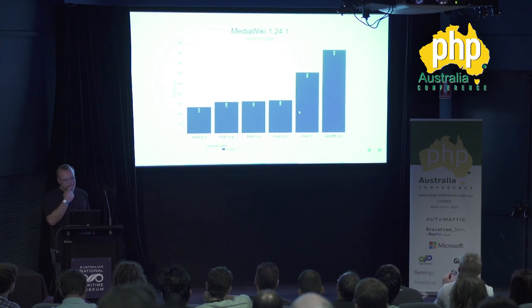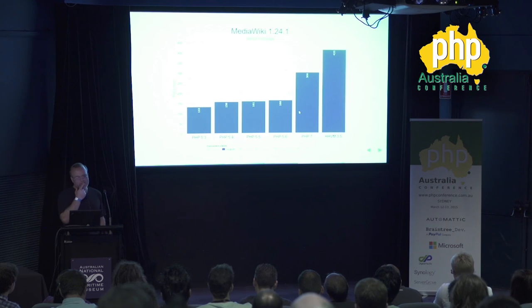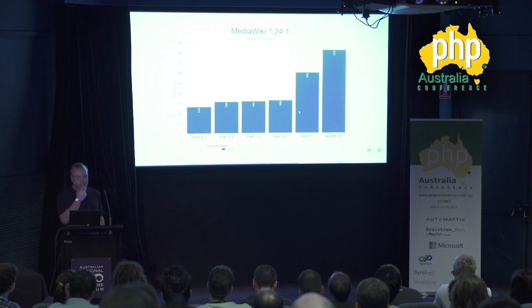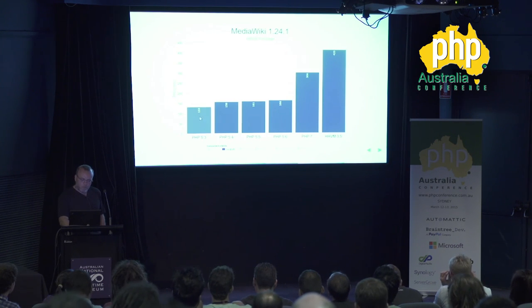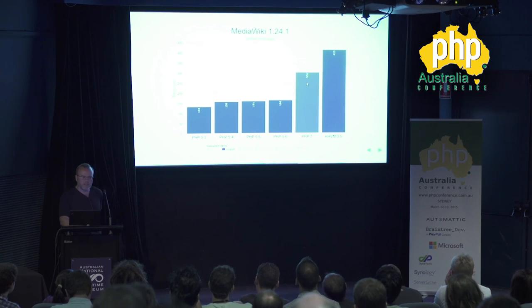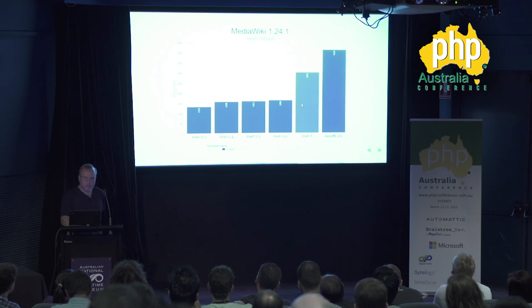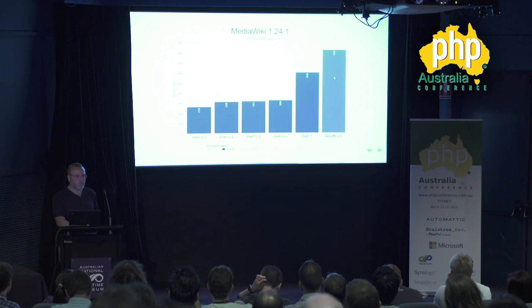MediaWiki — here you can see why Wikipedia switched to HHVM, because HHVM runs MediaWiki really, really well. PHP 7 runs it pretty well too — from PHP 5.3, you have almost a 2.5x to 3x increase going to PHP 7. But you get even more if you're running MediaWiki with HHVM.